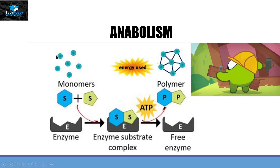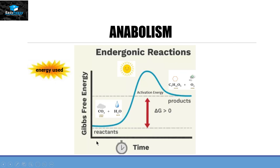Anabolism is the opposite of catabolism — we have monomers at the substrate level and require energy to convert them into polymers. In the anabolism graph, the reactants have low Gibbs free energy and the products have high Gibbs free energy, so energy in the form of ATP is used. For example, carbon dioxide and water with the help of sunlight convert themselves into glucose and oxygen — that is the photosynthesis reaction. These are non-spontaneous or endergonic reactions.